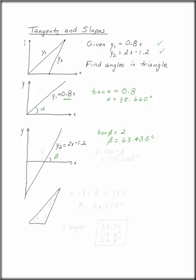That angle isn't actually in our triangle, but this one is, and delta is 180 minus beta, or 116.565 degrees.